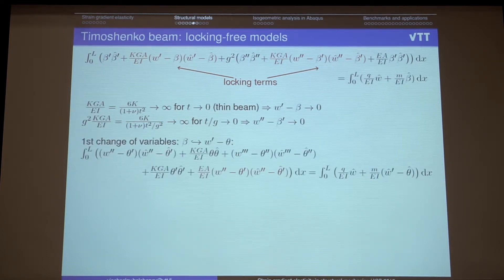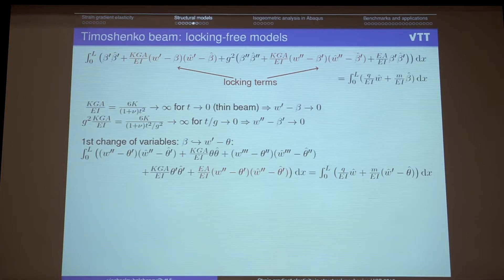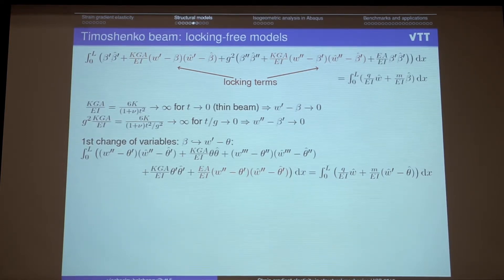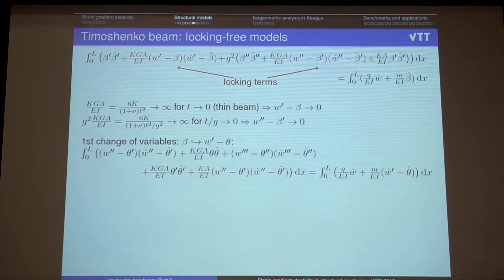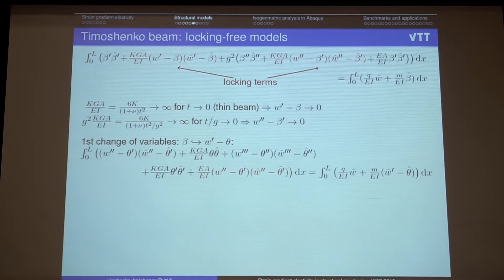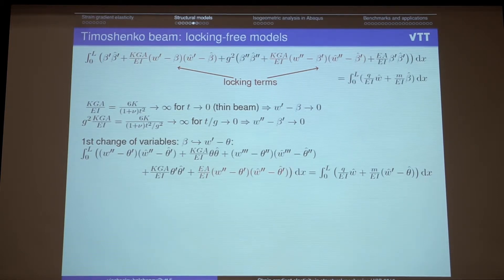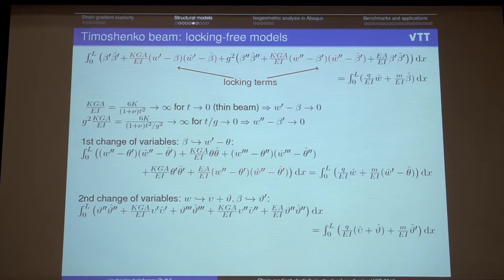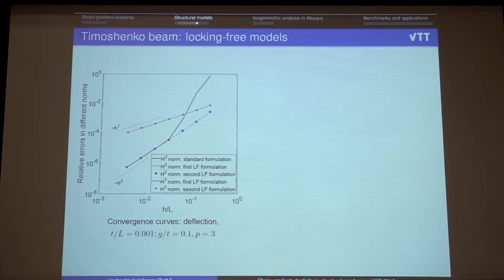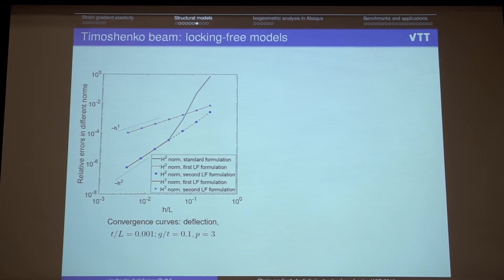And we suggested changes of variables to get rid of such kind of effects. Which also works for gradient elastic Timoshenko beam model. So first we suggested first one change of variables. But it works good. But one can ask why we still have this kind of locking terms. Then we suggested also second change of variables which doesn't contain any type of locking terms. And it works perfectly. There is no locking as we can see in the standard model.